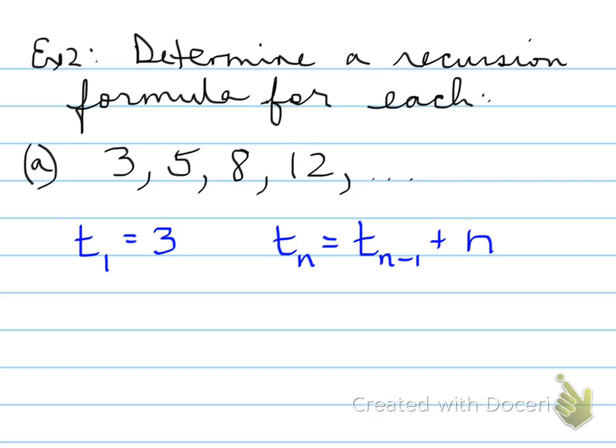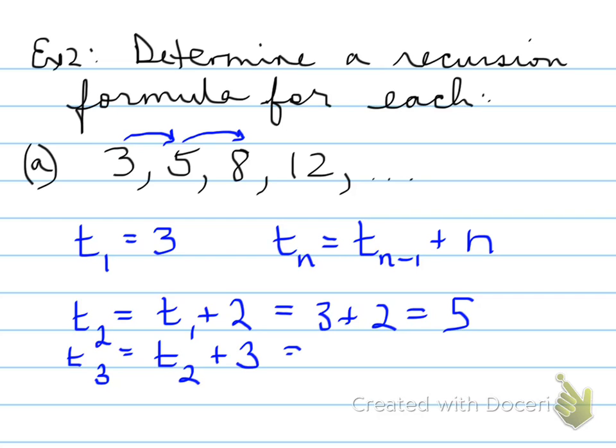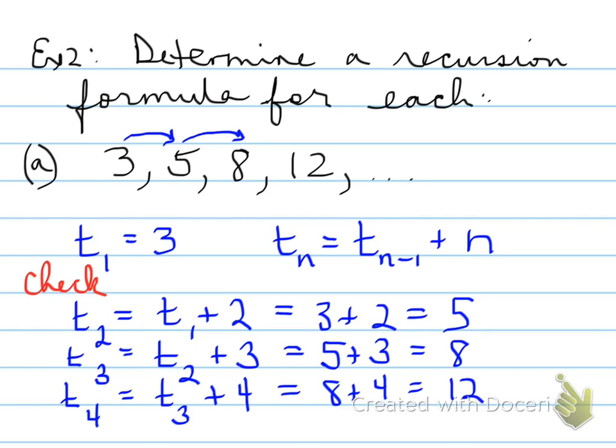Tn is going to equal the previous term plus the actual term number. The term value is equal to the previous term value plus the actual number that it's placed in. So T2 equals T1 plus 2. Let's do a quick check to see if that value works. Yes, it does. Turns out it's the right answer. T3, we check that one out, turns out it's the right answer. And T4, we check that one out, turns out that one's the right answer. Pretty sure that this is the right recursion formula for this example. You should do a check just to make sure you've done this properly.